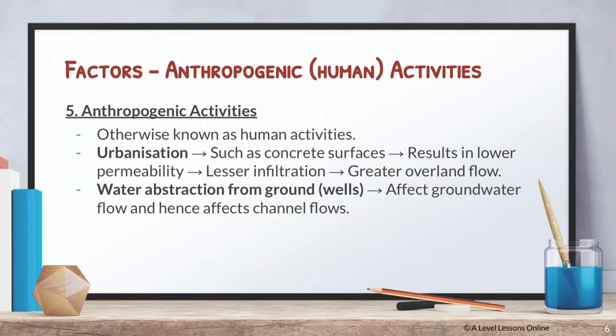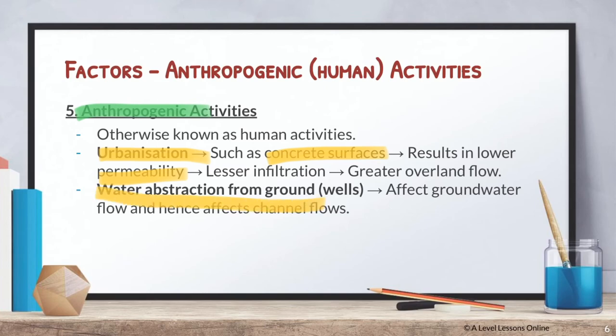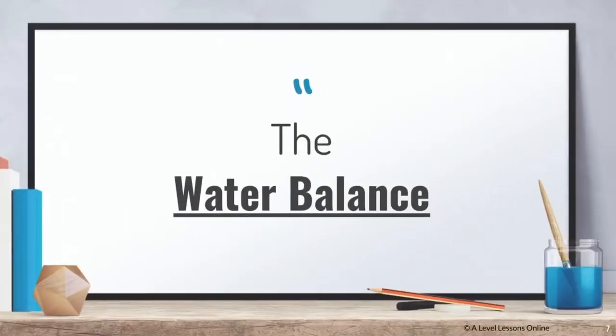We also need to consider human activities — anthropogenic activities — such as urbanization. Introducing concrete surfaces reduces permeability, resulting in less infiltration and greater Hortonian overland flow. There can also be water abstraction from groundwater, especially in older cities, which affects both groundwater flow and channel flow as water is being extracted from the water table.